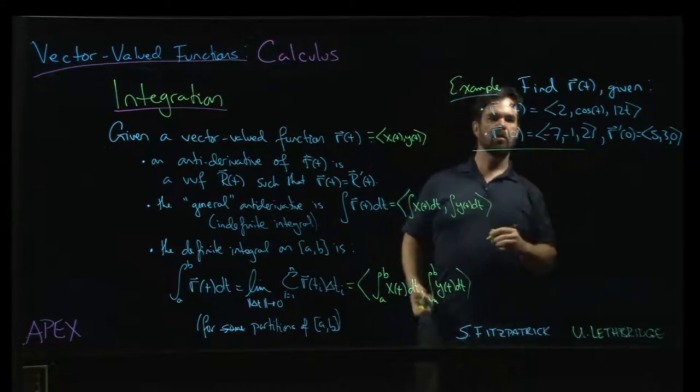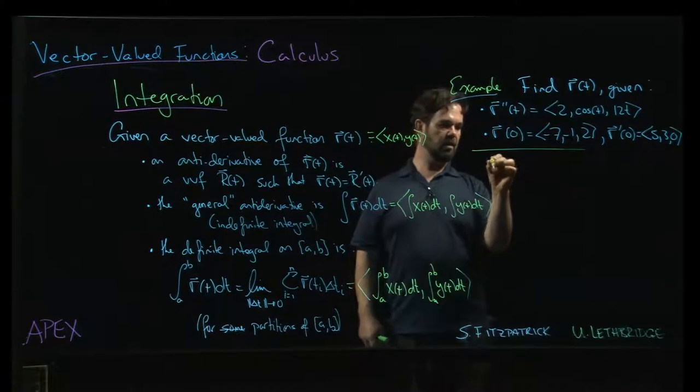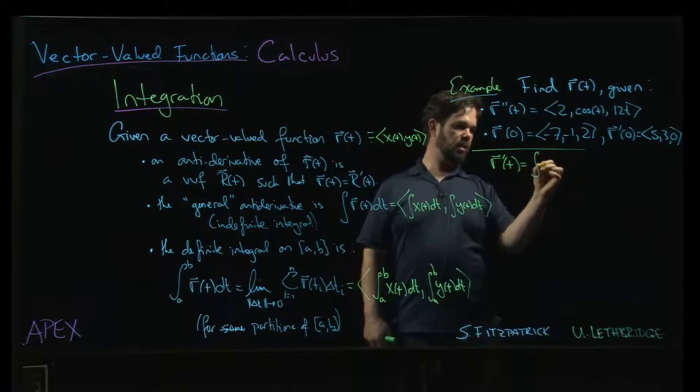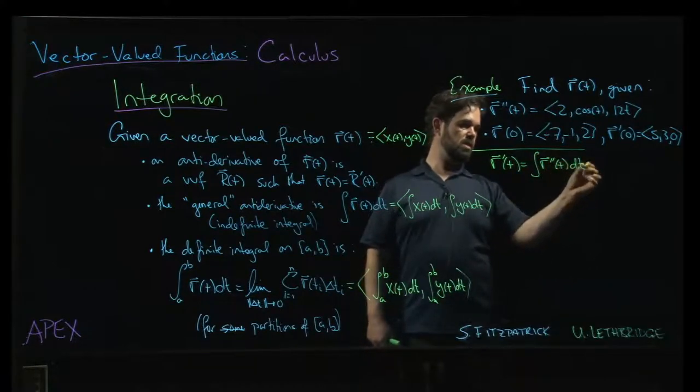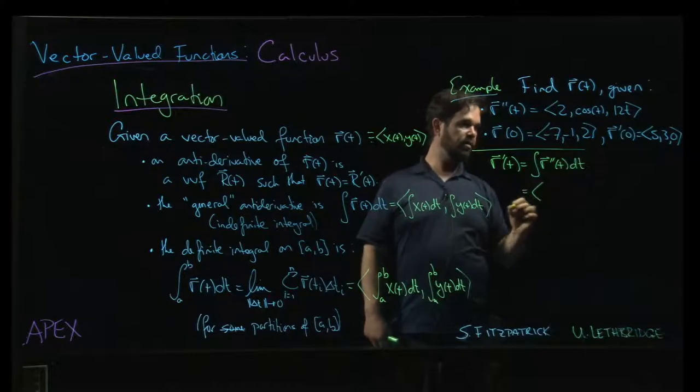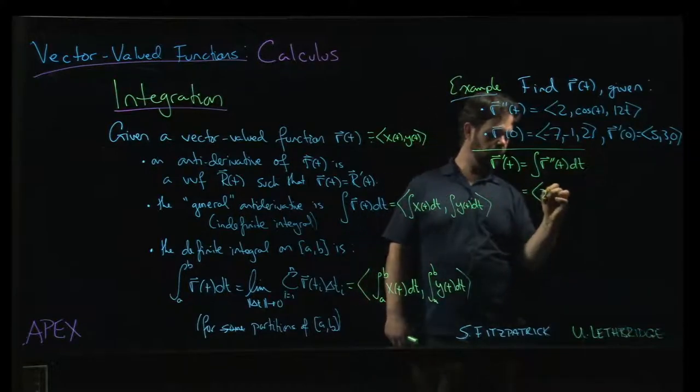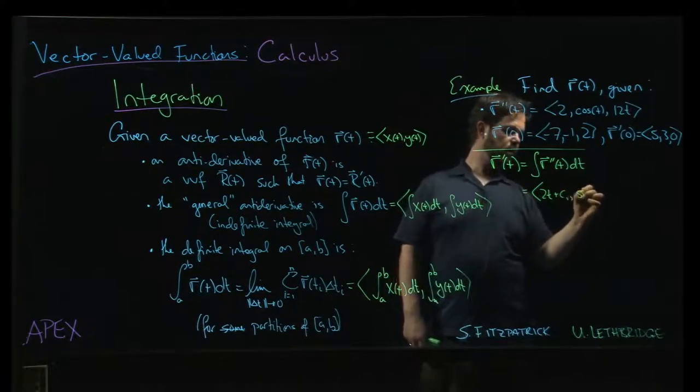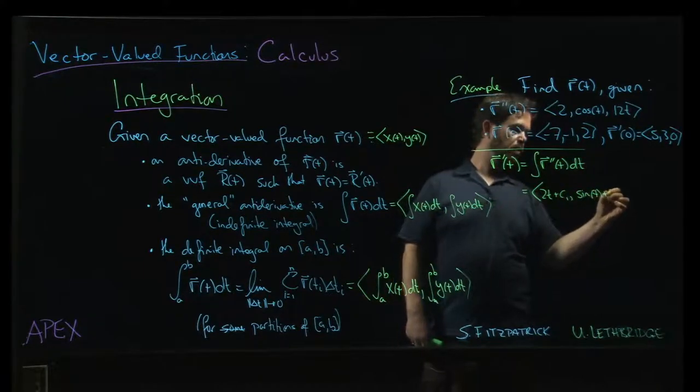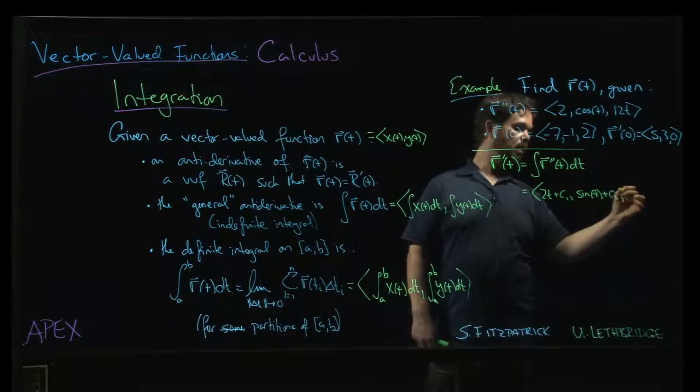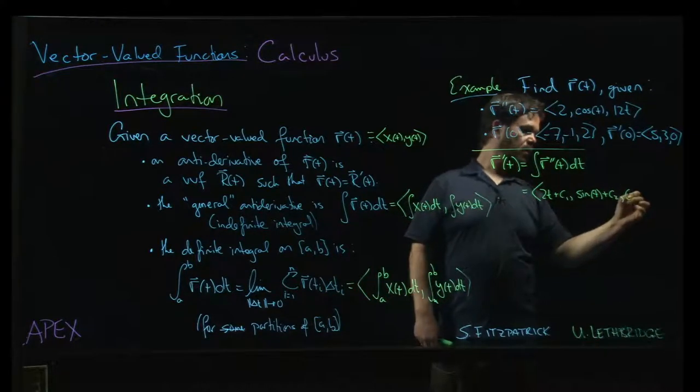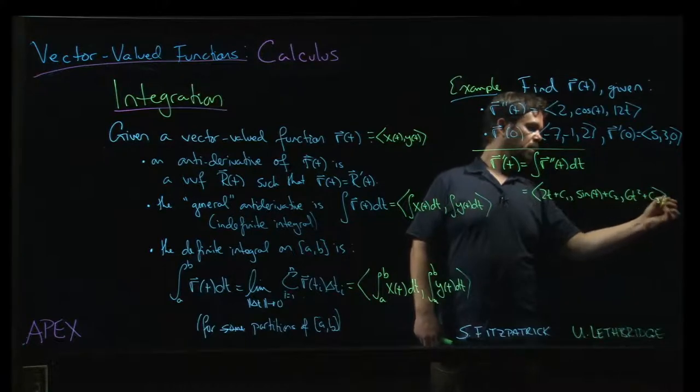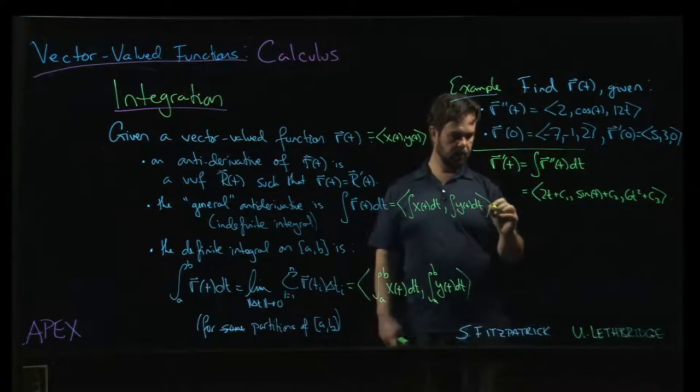Okay, so first thing we'll do is we'll say that r prime of t should be the integral of r double prime of t dt. So that's going to look like this. We have 2t plus c1, and then sin t plus c2, and then 6t squared plus some c3.